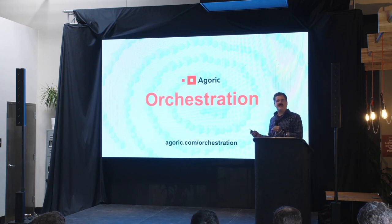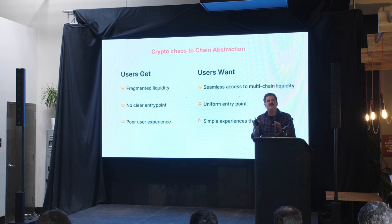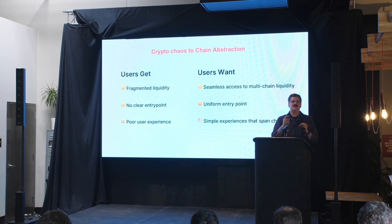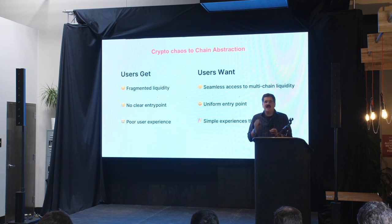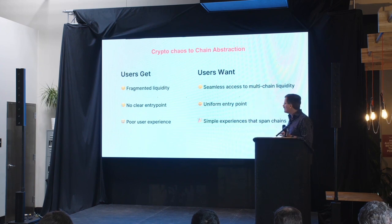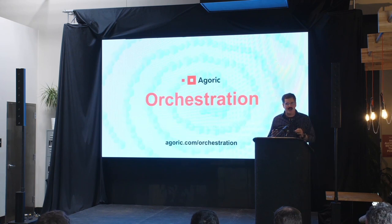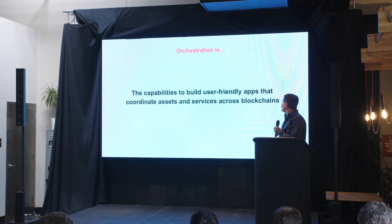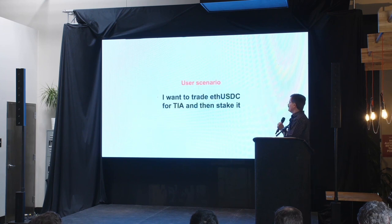Providing that user experience is the chain abstraction vision — going from the crypto chaos of a thousand potential entry points and a thousand applications to a simple unified view with access to digital assets and services seamlessly across multiple chains. That's what chain abstraction is: the vision of what the user wants and what we need to provide for this to matter at a much larger scale. It's hard to implement. Our approach is orchestration — the capabilities to build user-friendly apps that coordinate all these assets and services in this connected but asynchronous world.